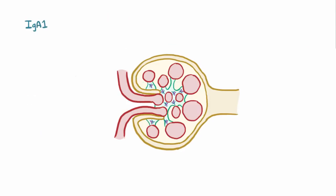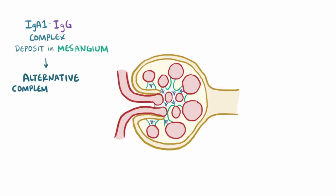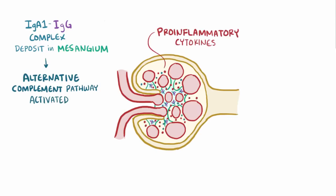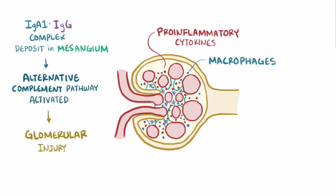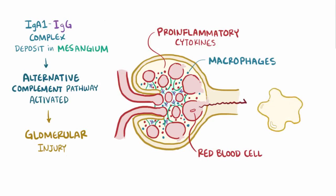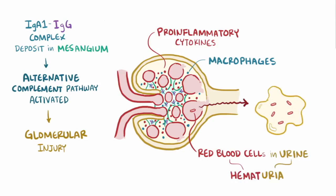When the abnormal IgA1 and IgG immune complexes deposit in the mesangium, the alternative complement pathway is activated, leading to the release of pro-inflammatory cytokines and migration of macrophages into the kidney, all of which contributes to glomerular injury. Usually the glomerulus and mesangium help filter the blood to remove wastes while keeping larger proteins and cells, including red blood cells, from getting into the urine. So when there's glomerular injury, red blood cells sneak into the urine, causing hematuria, which contributes to this being a type of nephritic syndrome.